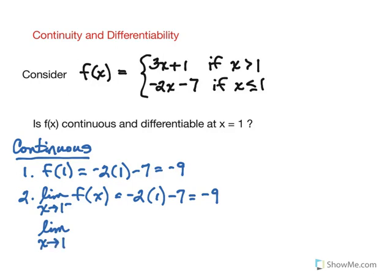If we now consider the limit as we come from the right, it is the first piece that applies for those values greater than 1. That would be 3 times 1 plus 1 and we get 4.